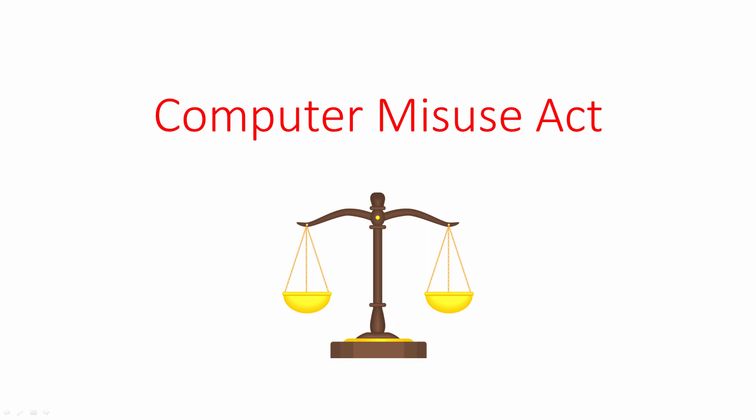In this computer science lesson, you'll learn about a law created specifically to deal with unauthorised access to computer systems — namely, the Computer Misuse Act. You'll also learn about different types of cybercrime, such as hacking, malware, and social engineering. The Computer Misuse Act is a British law, but later you'll hear about some equivalent laws in other parts of the world, such as the United States of America, India, and Europe.